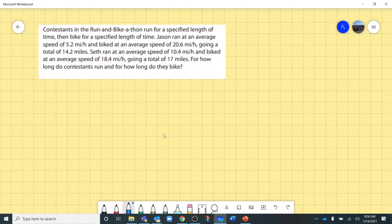Seth ran at an average speed of 10.4 miles per hour and biked at an average speed of 18.4 miles per hour, going a total of 17 miles. For how long do contestants run and for how long do they bike?